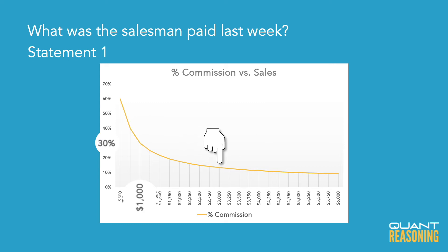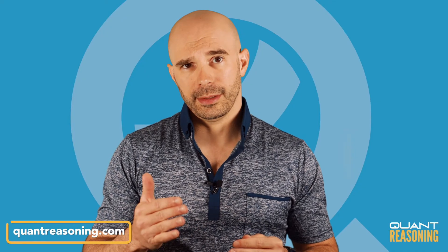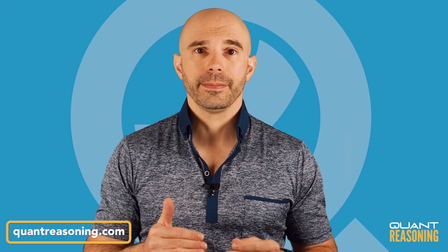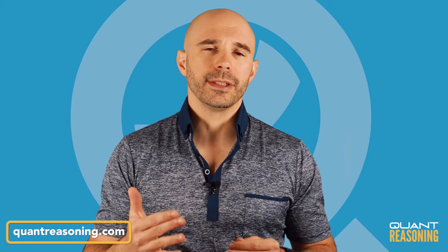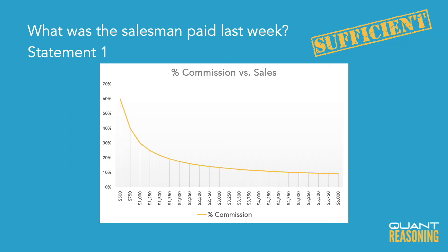Now maybe you're thinking: wait, couldn't it be that I got 10% with sales under $1,000? The answer is no. If I sold less than $1,000, my percentage would actually be even higher. I'm still getting $300 no matter what, so if I only sold $500 worth of product, I'd be earning 60% of my sales.